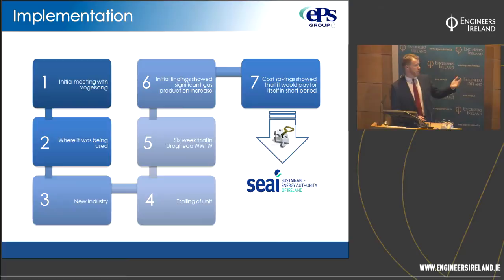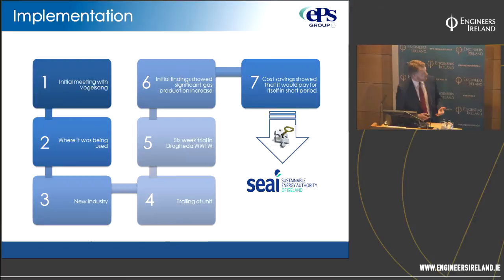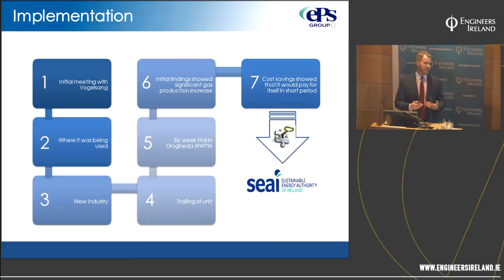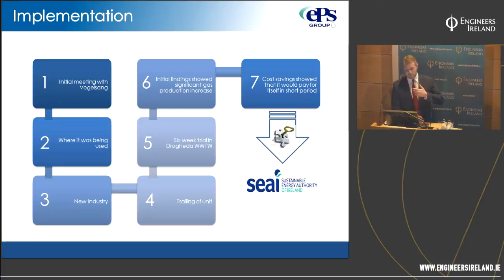We met with Vogelsang about moving BioCrack into municipal wastewater — an area where they had no existing references but were interested in developing. They conducted in-house trials comparing municipal wastewater to the agricultural maize and dung they had been digesting, and found very positive results. We then progressed together with a six-week trial at a treatment plant in Drogheda, placing the unit on the recirculation line of one of the digesters. Drogheda was chosen partly for its very low sludge retention time.